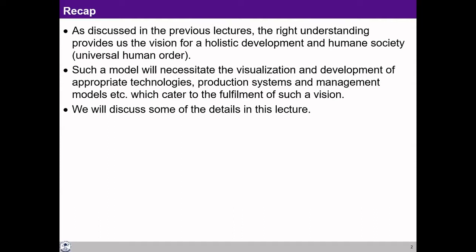We identified the human goal, then identified the systems through which these goals can be realized, and also identified the scope of the whole system — which starts from the family order, the smallest unit, right up to the world family order. So the goal can be identified clearly, the systems through which they can be realized can be identified, and the total scope from family order to world family order can be identified.